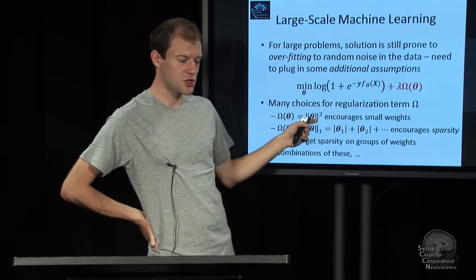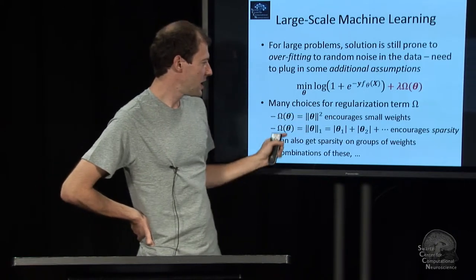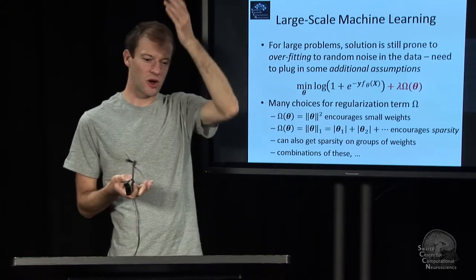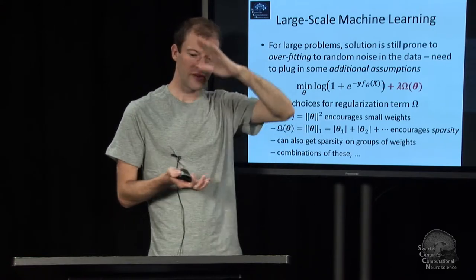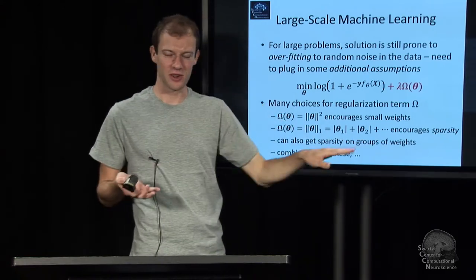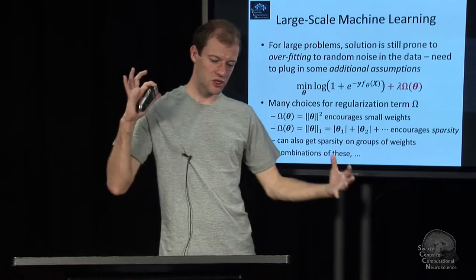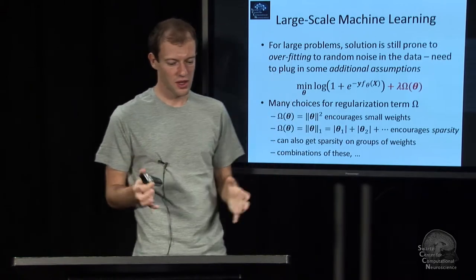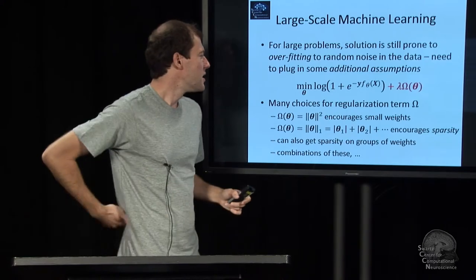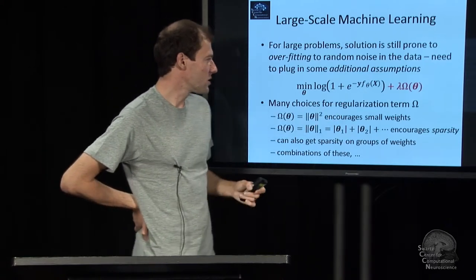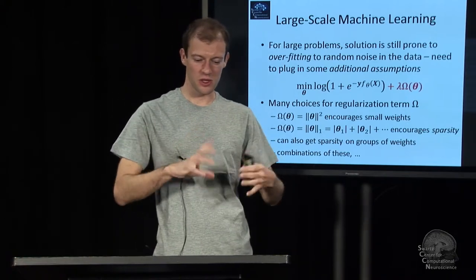And one standard choice is the squared L2 norm of this weight vector or matrix. That will penalize large weights with the square of their value, basically. And so basically, it'll just drive the profile of your weights down. So you get generally rather small weights. And in a sense, you say your solution is sort of contained in a volume in 3D space that is small or compact.